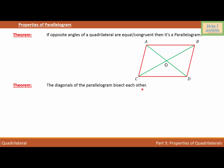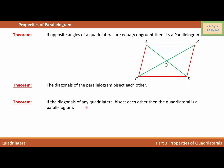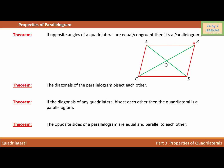The diagonals of a parallelogram bisect each other, which simply means that AO equals OD and OC equals OB. The next theorem is the converse: if the diagonals of any quadrilateral bisect each other, then the quadrilateral is a parallelogram. The last theorem is: the opposite sides of a parallelogram are equal and parallel to each other, meaning AB is congruent to CD and parallel to CD, and BD is congruent to CA and parallel to CA.